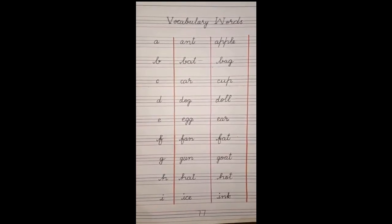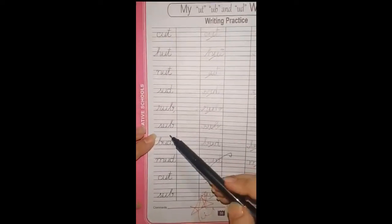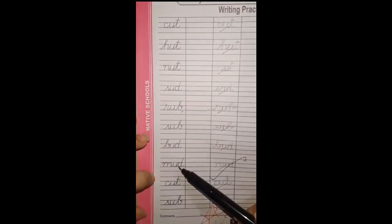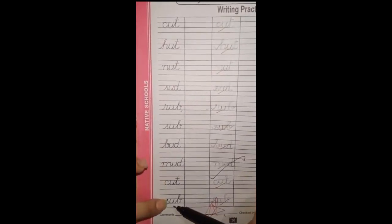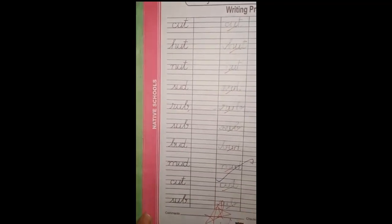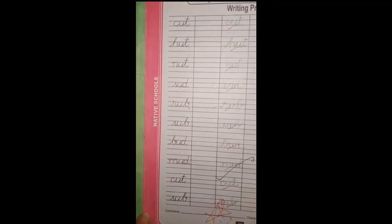Aap logon ne ghar mein is ki bahut si practice karni hai aur achhi tarah inke words ko learn karna hai. Okay students, aaj ka hamare dictation page hai 50, aur iske next words hain: S-A-B-A sub, B-A-D-A bird, M-A-D-A mud, K-A-T-A cat. Aap ne in words ki dictation karni hai aur isko rough copy par write bhi karna hai, achhi si practice karni hai. Okay student, aage barhte jayen, parhna hai rukna nahi. Thank you so much students.